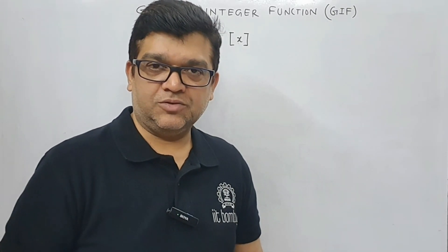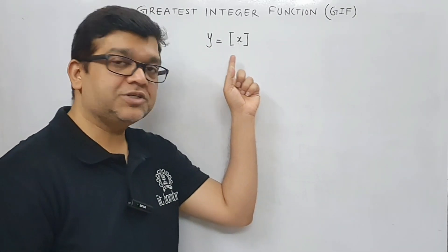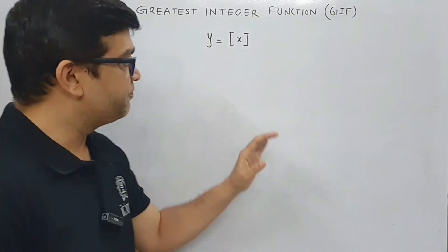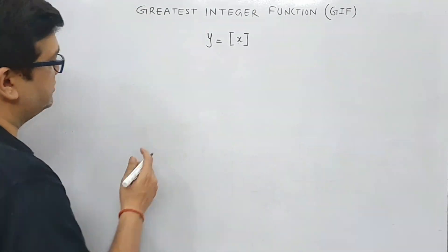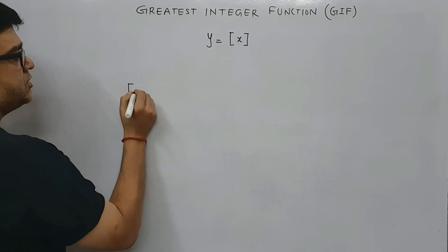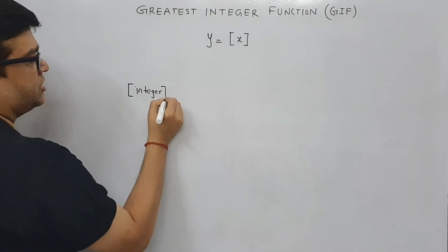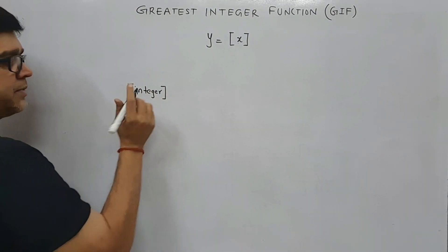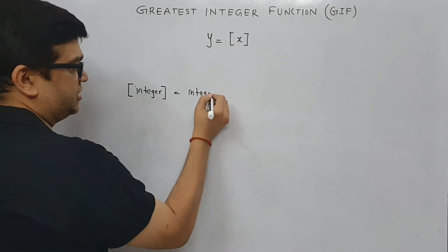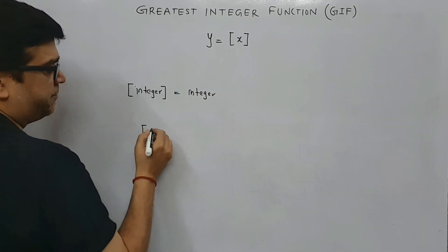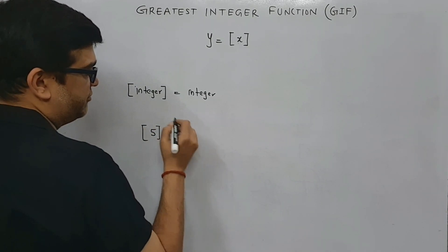The greatest integer function, also called GIF in short, is denoted by the symbol y equal to box of x. Now let's see what this does. First of all, if the input inside this box is an integer, then the answer is simply that integer. For example, box of five will simply be five.